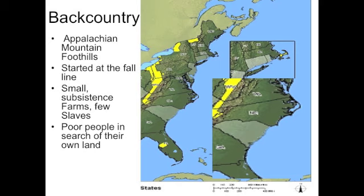The backcountry was a colonial region of less formal designation. It spread throughout the entire Appalachian Mountain foothills, from the northernmost point in New York to the southernmost point in northern Georgia. It started at the fall line, where rivers cascade down waterfalls into the lazy rivers that run into the ocean. Most people in the backcountry were small subsistence farmers with very few slaves. These were essentially poor people in search of their own land to farm, as they could not afford land on the coast.